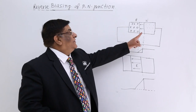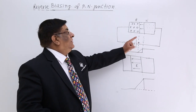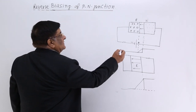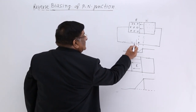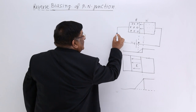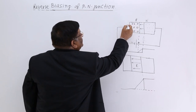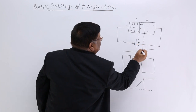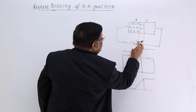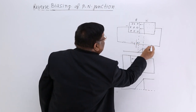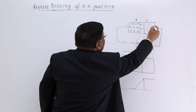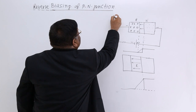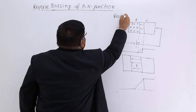We are connecting a P-N junction in reverse bias. When we say reverse bias, the negative terminal of the battery is connected with the P-type semiconductor and the positive terminal of the battery is connected with the N-type semiconductor. This is known as reverse bias.